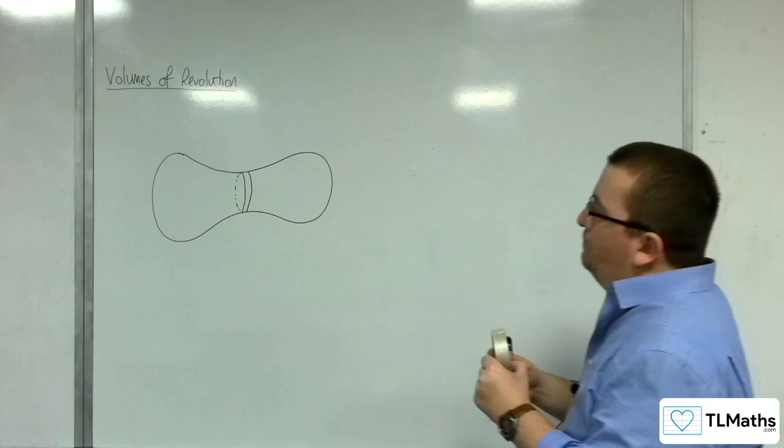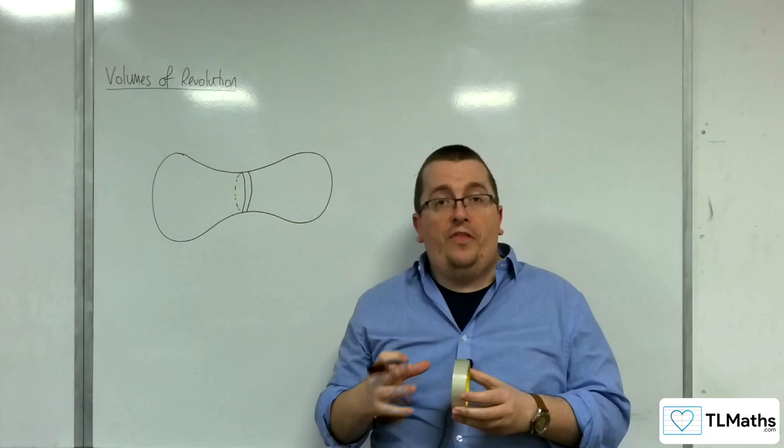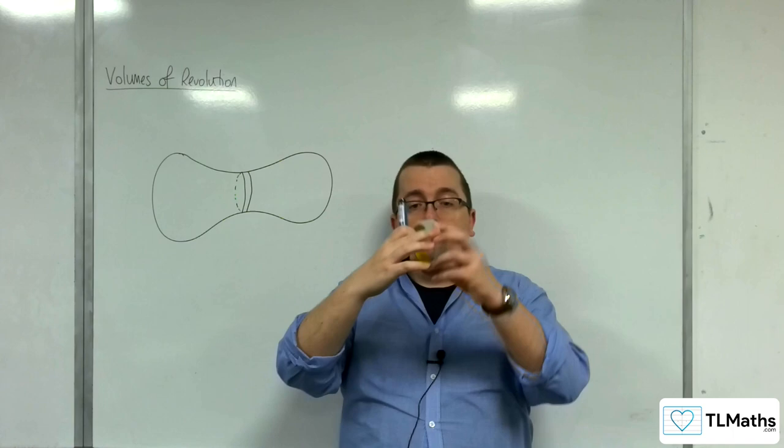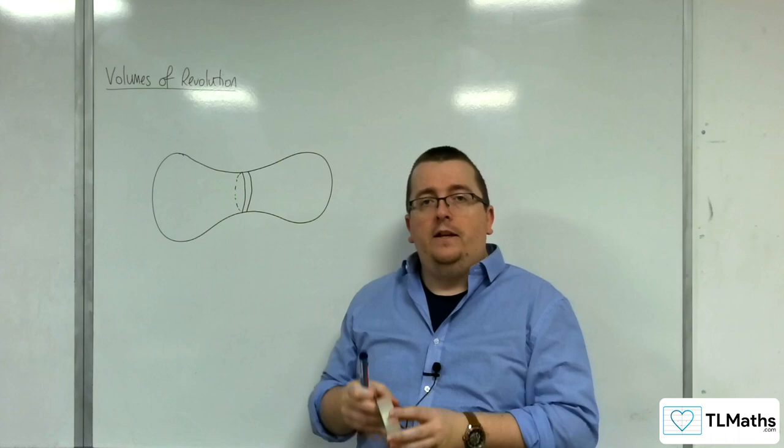It's not going to be perfectly like a cylinder. But if I make the slice thin enough, then the circles that are either side of it, so either side of the slice, will be almost exactly the same. So imagine that you have taken a slice.